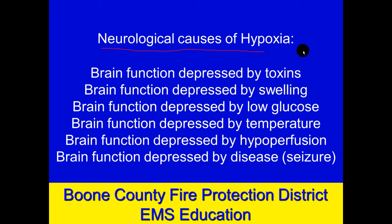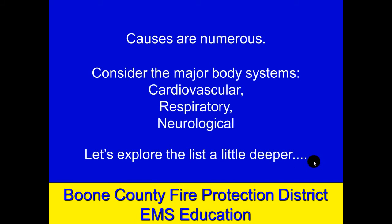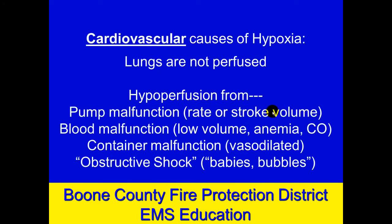And don't forget the neurological system is in command and control for both respiratory and cardiovascular. So we have to investigate neurological causes of hypoxia — all of them related to the brain not functioning for various reasons: maybe alcohol or drugs, increased pressure in the skull, low glucose, high or low temperature, maybe the brain's not perfused, or some disease process like seizures or a stroke.